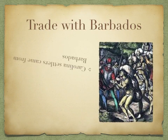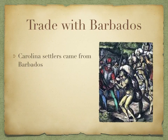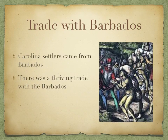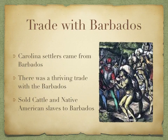South Carolina also traded with Barbados, a British colony in the Caribbean. A lot of Carolina settlers came from Barbados — when South Carolina was first founded, many settlers picked up from that small island and moved there. Because of those connections, there was still a thriving trade between South Carolina and Barbados. They sold cattle and Native American slaves to Barbados, since Native American slaves sent there couldn't escape as easily as they could on familiar land.